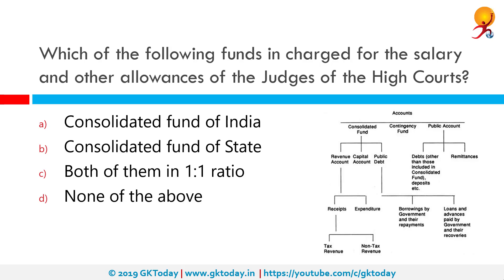Which of the following funds is charged for the salary and other allowances of the judges of the high courts? The correct answer is the Consolidated Fund of State. Under Article 266 of the Constitution of India, a Consolidated Fund of State, which is a separate fund for each state, has been established where all revenues — both tax revenues such as sales tax, VAT, stamp duty, etc., and non-tax revenues such as user charges levied by state governments — are received by the state.